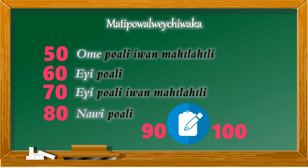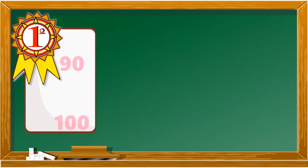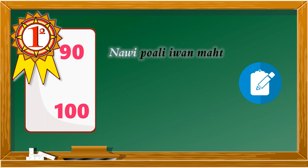Escribe en los comentarios cómo quedaría el nombre del 90 y el 100 en náhuatl. Si tus resultados fueron estos, ¡felicidades! Para el 90: nawuipoali iwamachiknawi. Para el 100: makuilipoali. ¡Felicidades!